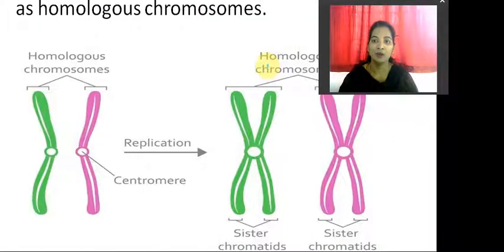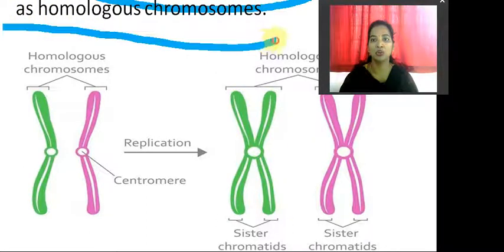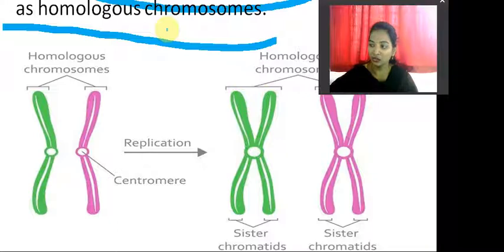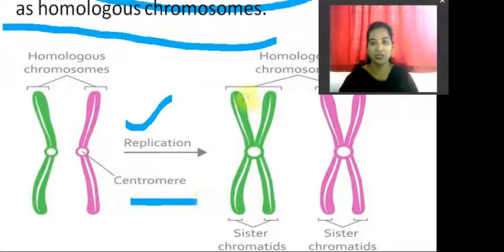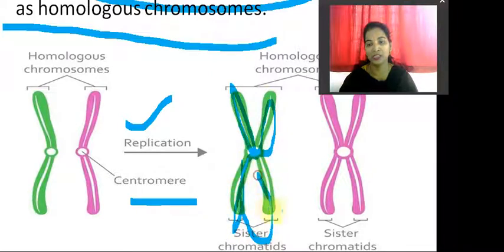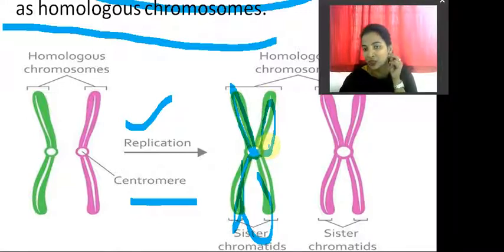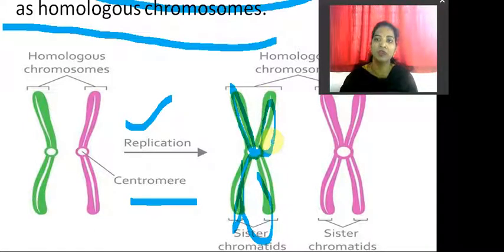There are two chromosomes of each kind. The two chromosomes of each kind are called homologous chromosomes. If they are present as each set, they are called homologous chromosomes. During replication, if they are having the same kind — same color of chromosome — they are sister chromatids. The same color indicates that homologous means the same type of chromosomes are present.